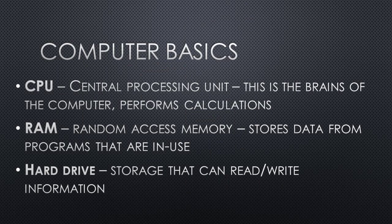So there are three computer parts that we should talk about next. First is the CPU or central processing unit. This is the brains of the computer and performs calculations. This also has a lot to do with the speed and the number of jobs or processes that can be performed at one time. Then next we have the RAM, which stands for random access memory. This is a short-term storage that stores data from the programs that are currently in use on the computer or your cell phone. And then last we have the hard drive, which is the storage, and this is where information can be read or written for processing and retrieving information stored in a computer.